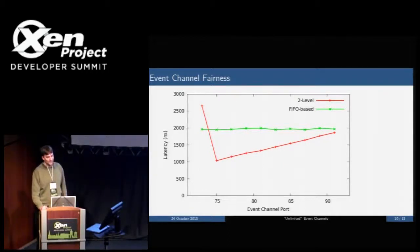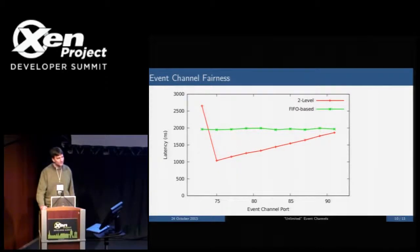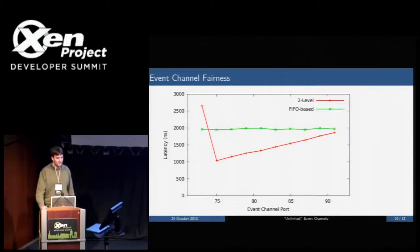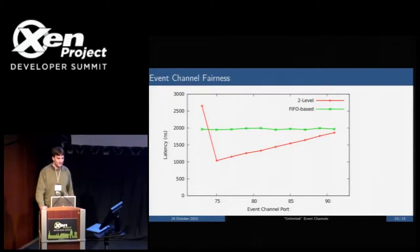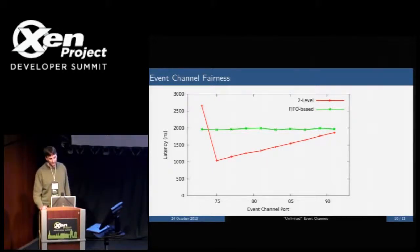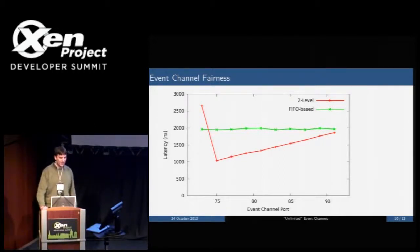In this example, we have port 73 firing about four or five times more often than the other nine events. The two-level design always ends up scanning for bits starting from the same place — just after the highest-rate port — so the port immediately after port 73 always gets serviced first with the lowest latency, and latency climbs as you move away, with the highest-rate port having the worst latency. With the FIFO-based design, because events are serviced in the order they're raised, we get completely uniform average latency.